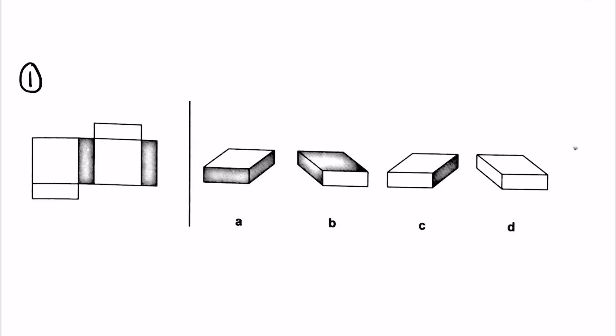For number one, we can see that the larger square's sides are not shaded — it's only the opposite sides that are shaded. As a result, we eliminate B because the larger square side is also shaded there. We eliminate D because none of the sides are shaded. We eliminate A because it shows adjacent sides shaded, not the opposite parallel ones. So we're left with C, which is the answer.